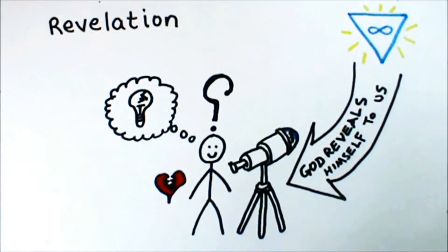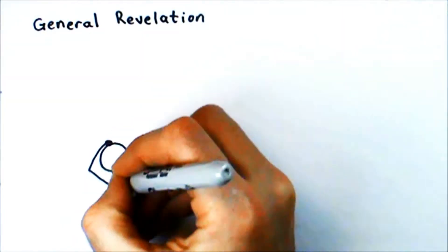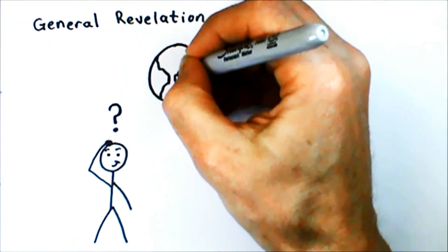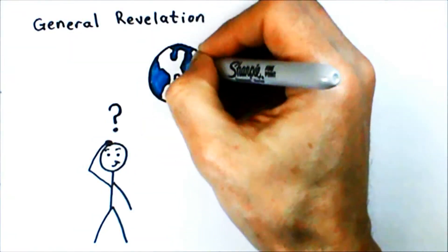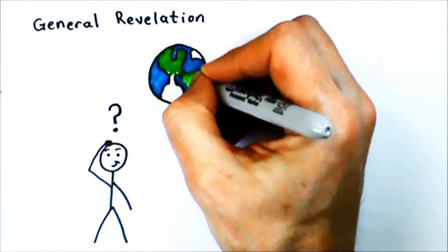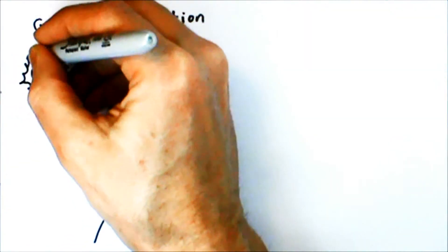General revelation is the stuff about God that we can learn and discern based on the world around us, and special revelation is the stuff God has revealed to us directly. We look at creation, for instance, and we see how huge it is, how intricately it's designed, and we figure, whoever made this must be all-powerful and wise.